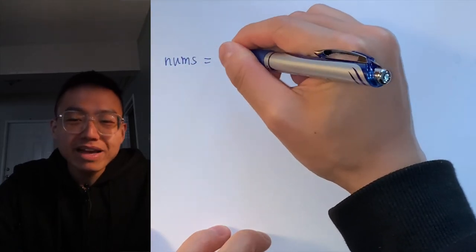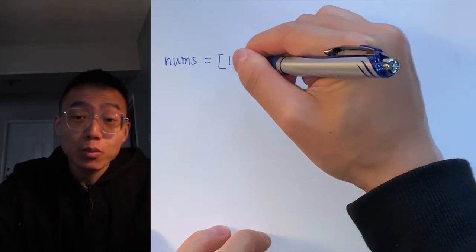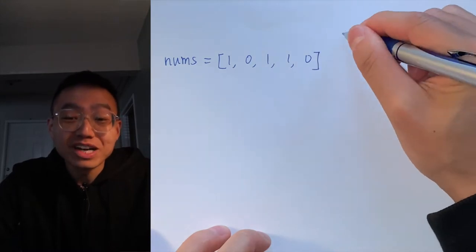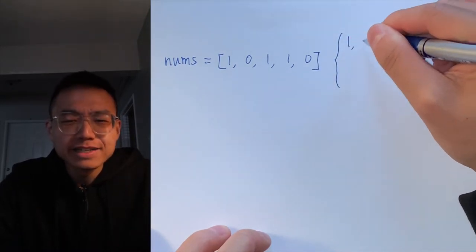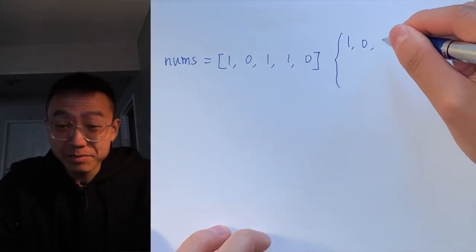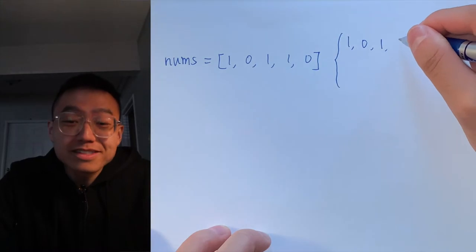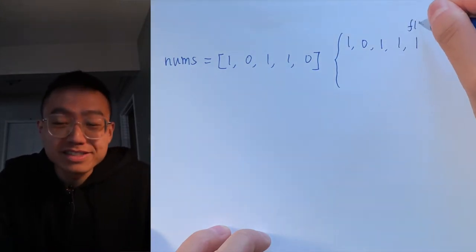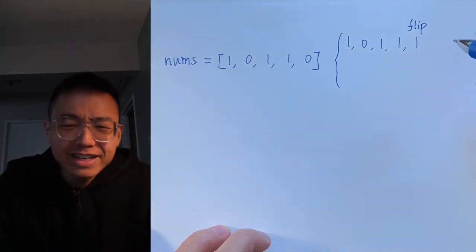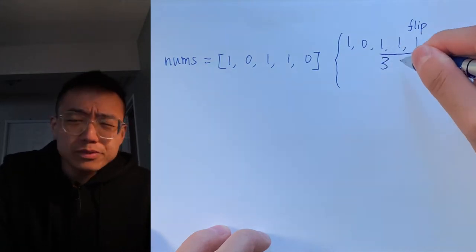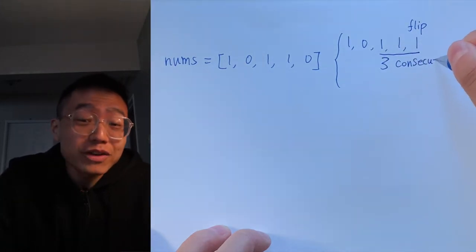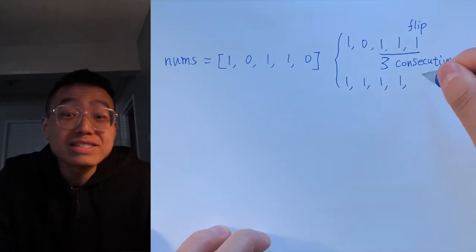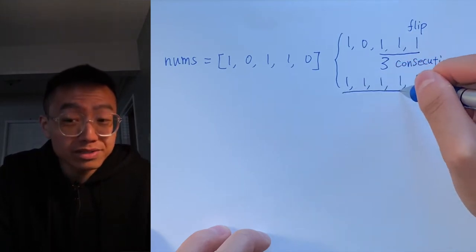Let's look at the question: Max Consecutive Ones Part 2. We are given a binary array nums. If you can flip at most one zero, then return the max number of consecutive ones in this array. This means we are allowing at most one zero within an otherwise consecutive run of ones.